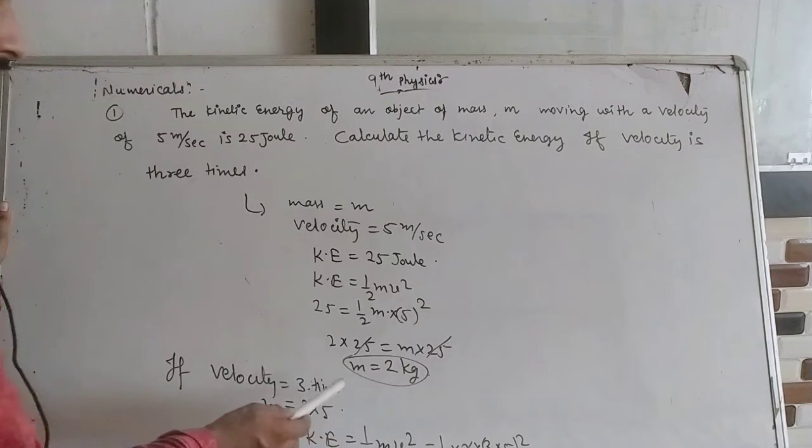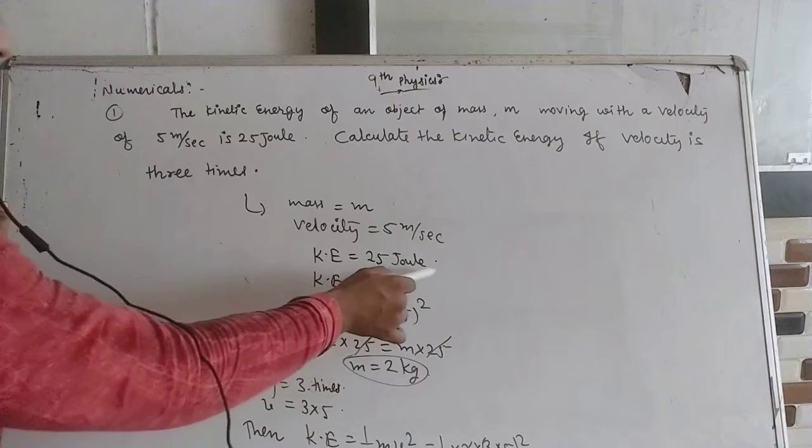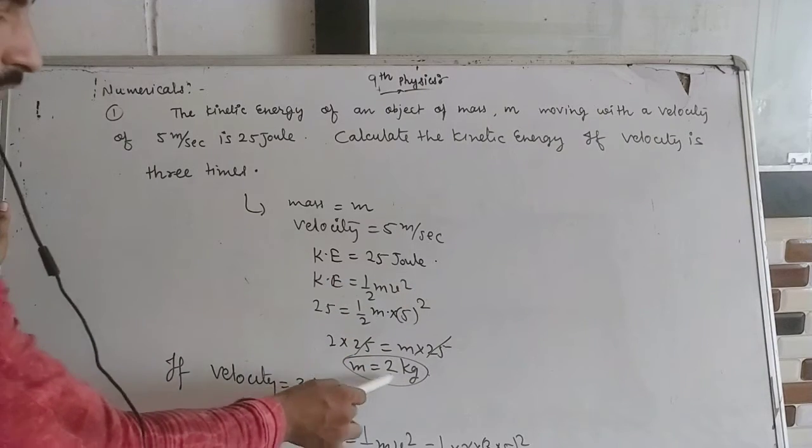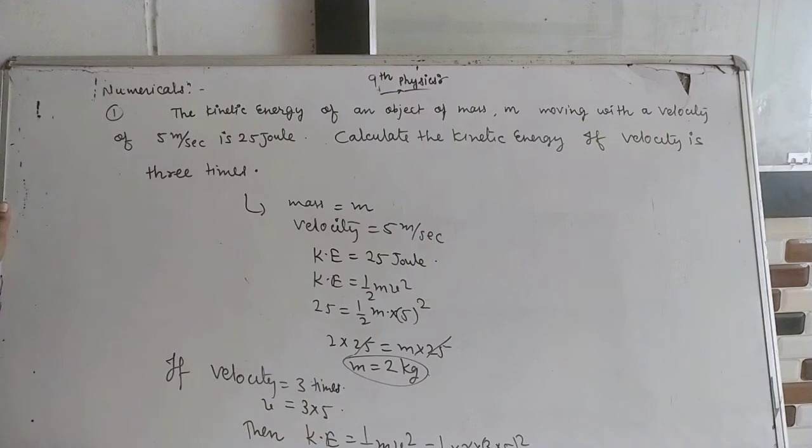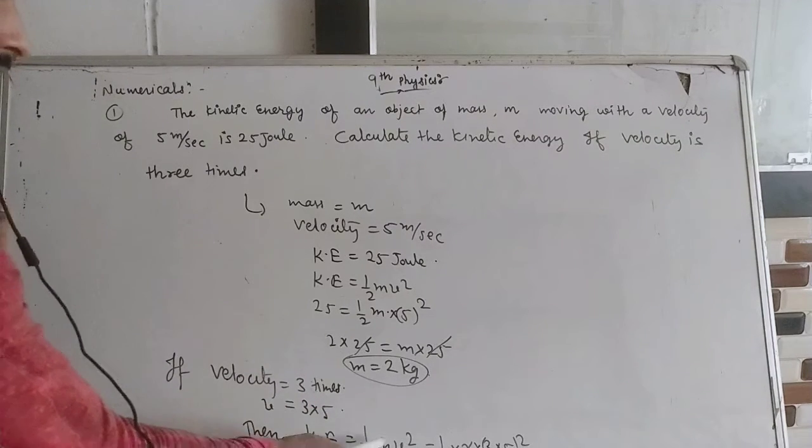You will find mass from the initial conditions. m equals 2 kg. Velocity is three times, that is 3 times 5, which equals 15 meters per second. Then new kinetic energy equals half mv squared.